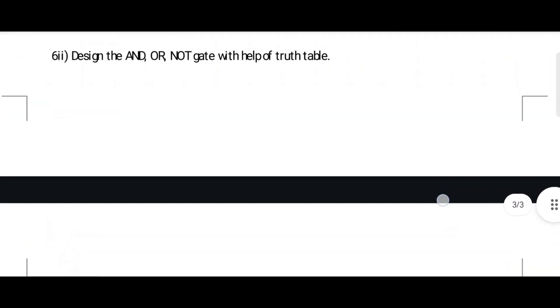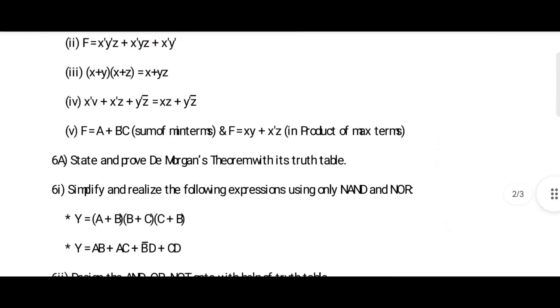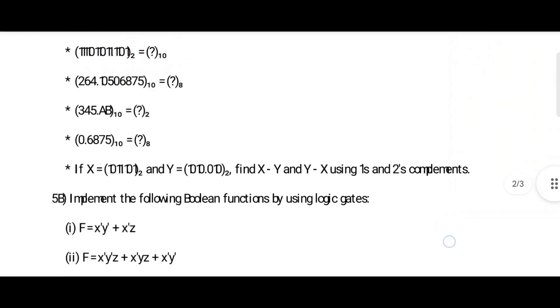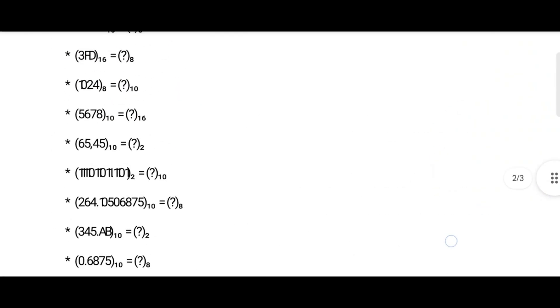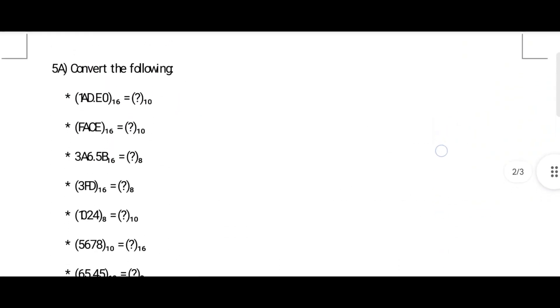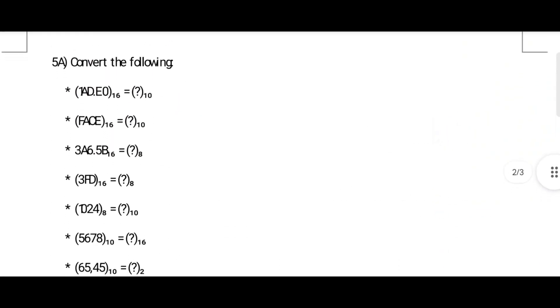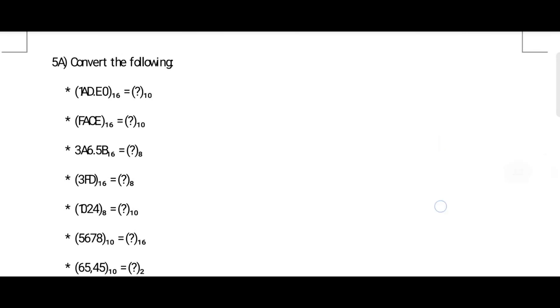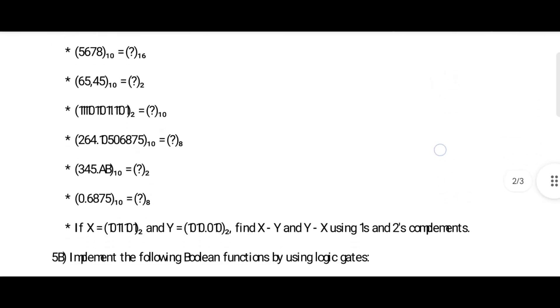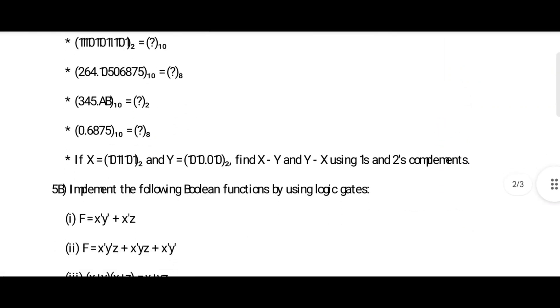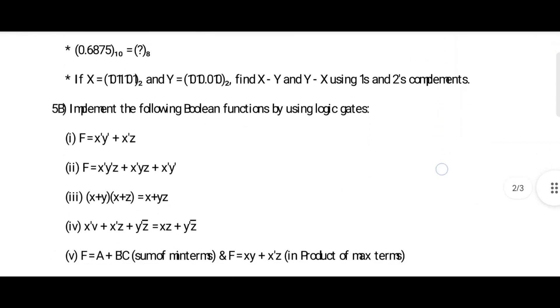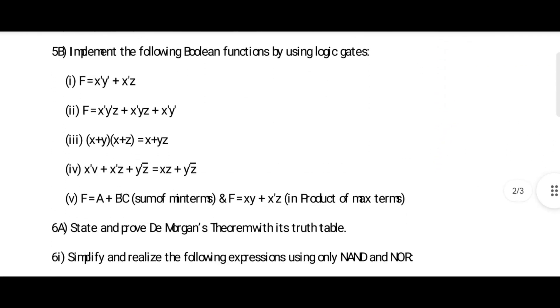Module 5 and 4 are completed. Let's see Module 3. In Module 3, there are sums — practice those, they are very important. Then: 'Implement the following boolean functions using logic gates.' This is also very important. If you read this, you can get 14 marks — that's my guarantee.